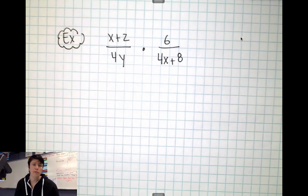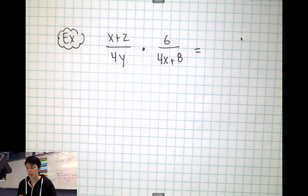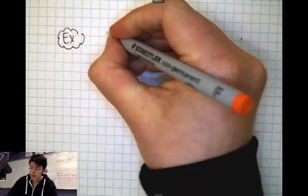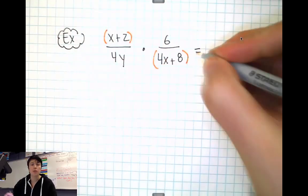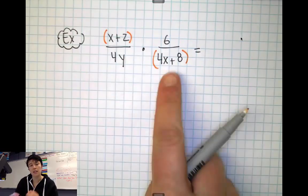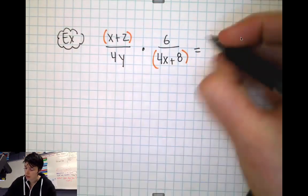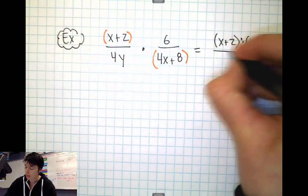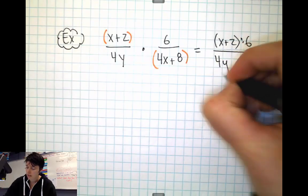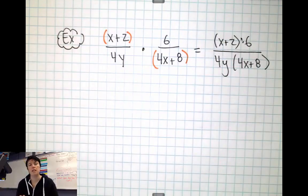Now it's still a multiplication problem, so I'm still going to go straight across. But this is one of those problems where you have to go in on your own and insert something. You need to group these adding problems together with some parentheses. x+2 needs to be grouped together, 4x+8 needs to be grouped together. Then you can multiply straight across. It's going to be (x+2) in a group times 6, and on bottom it's going to be 4y times the group (4x+8).